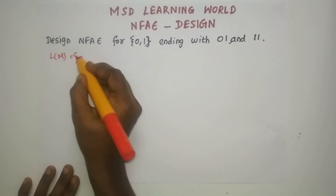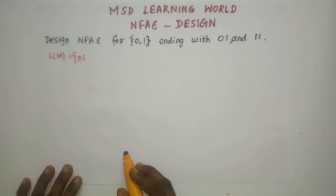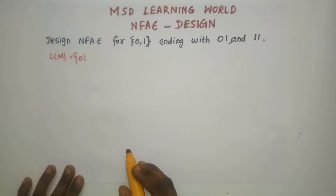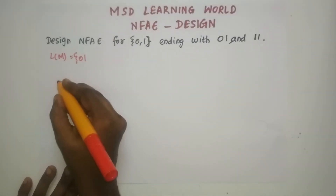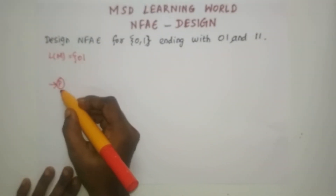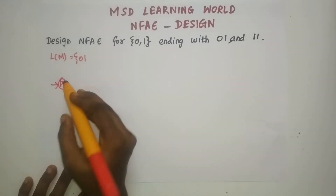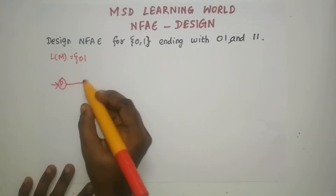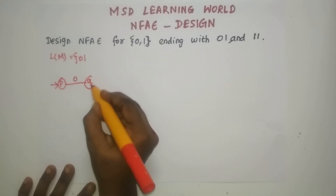The minimum language is 0,1. With that minimum string, we are going to conclude the total number of states for the NFA Epsilon. I am going to assume the initial state as P. To accept 0,1 from state P, let me have a transition for 0 and go to state Q.